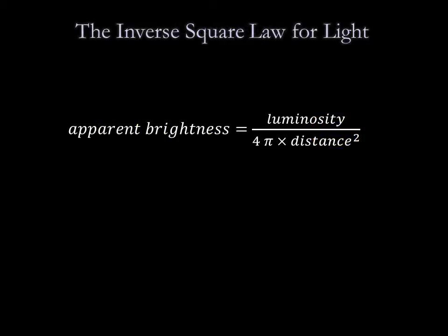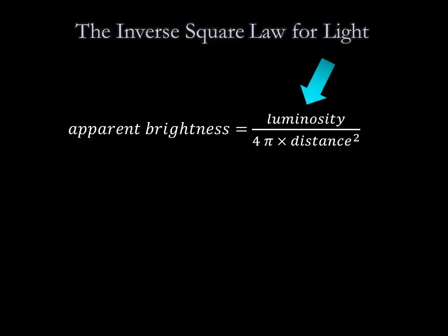The apparent brightness of a star or any light source obeys an inverse square law with distance, much like the inverse square law for the force of gravity. In equation form, the inverse square law of light says that the apparent brightness equals luminosity over 4 pi times the distance squared.